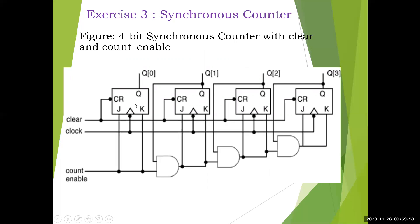This is a master-slave JK flip-flop. The clear signal is given to all four JK flip-flops, and the clock is given to all four JK flip-flops — that's why it is synchronous. In the previous case we had a ripple carry counter, where only the first flip-flop was given the clock, and then its output was given as the clock to the next — that is asynchronous. Here it is synchronous: clock is given to all, along with count enable.